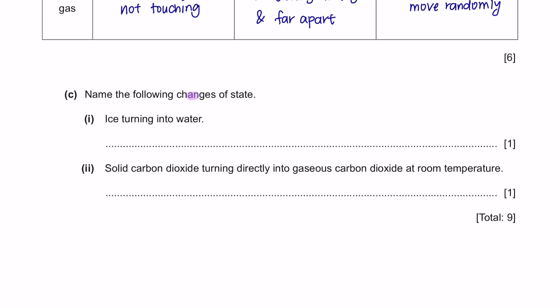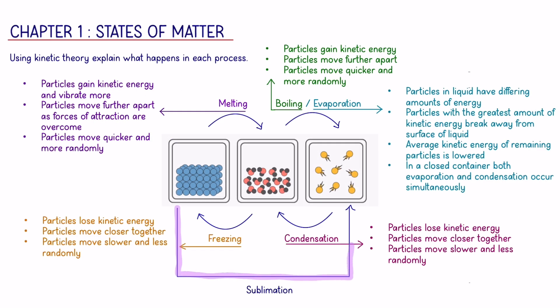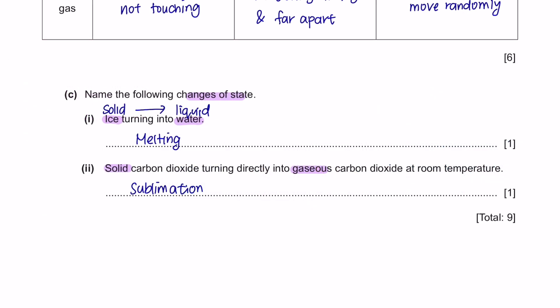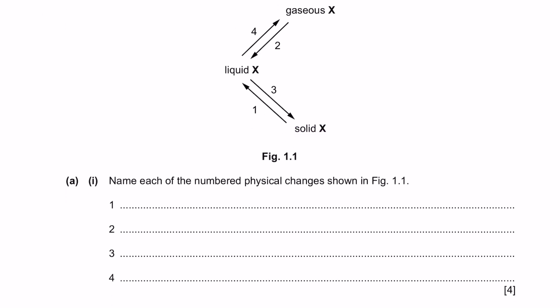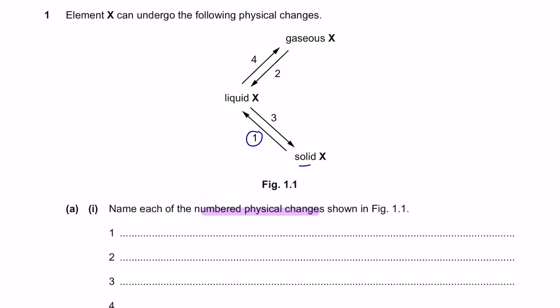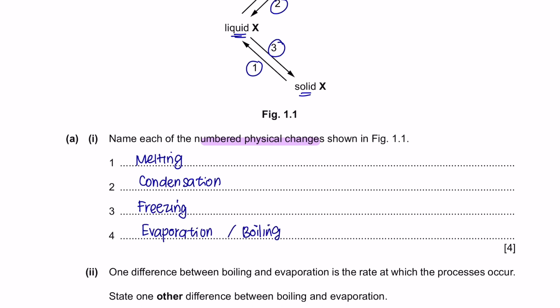Next question part C. Name the following changes of state. Ice is solid, turning into water which is liquid, is the process of melting. Next, solid carbon dioxide turning directly into gas at room temperature. Solid turning directly into gas is sublimation. Next question 2: Element X can undergo the following physical changes. You are asked to name each of the numbered physical changes. Number 1 is when solid turns into liquid, which is melting. Number 2 is when gas turns into liquid, that would be condensation. Number 3 is when liquid turns into solid, which is freezing. And lastly, we've got liquid turning into gas. That could be either evaporation or boiling.